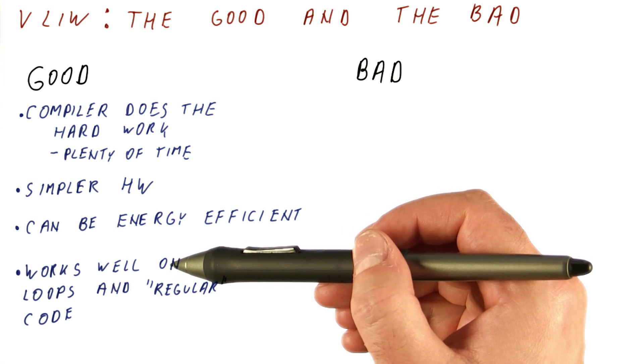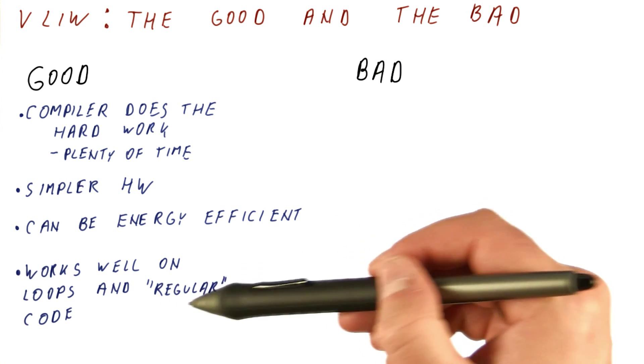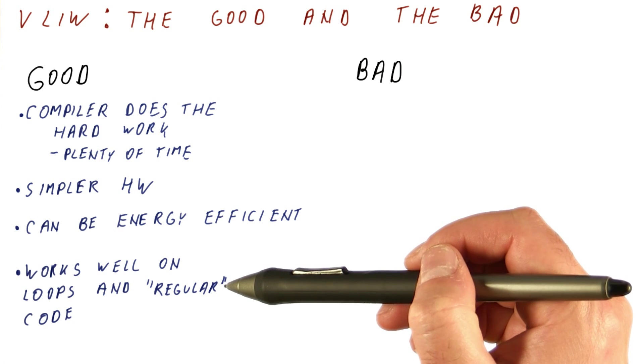And the VLIW processors typically work really well on loops and so-called regular code, where regular code is basically things like sweeping through arrays, multiplying matrices, and other things that the compiler can easily figure out and then schedule well around it.